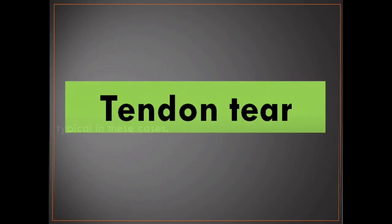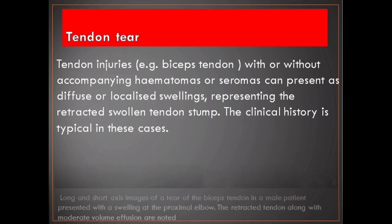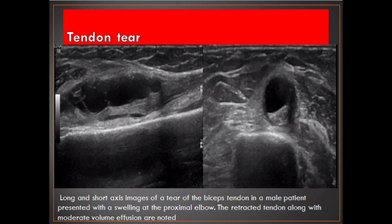Tendon tear. Tendon injuries, for example biceps tendon, with or without accompanying hematomas or seromas, can present as diffuse or localized swellings representing the retracted tendon. The clinical history is typical in these cases. Long and short axis images of a tear of the biceps tendon in a male patient presented with a swelling at the proximal elbow. The retracted tendon along with moderate volume effusion are noted.